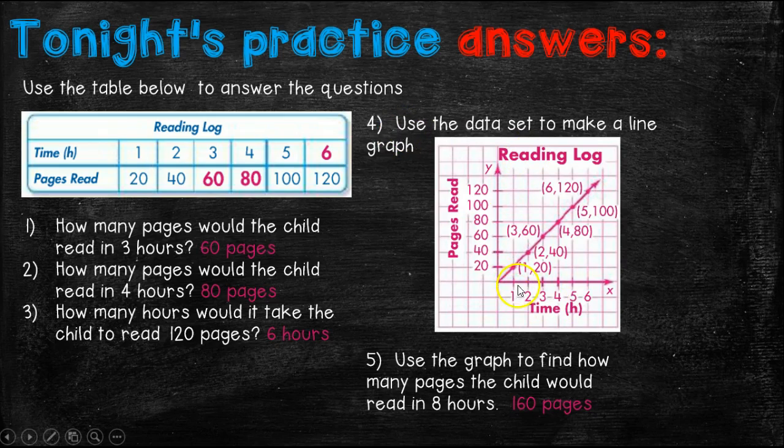So here is the graph that you would draw up. And of course, the time is one, two, three, four, five, six. But here, I hope instead of doing one, two, three, four, all the way up to 120, that you counted by 20s. You saw what the rule was and you were able to do it that way.